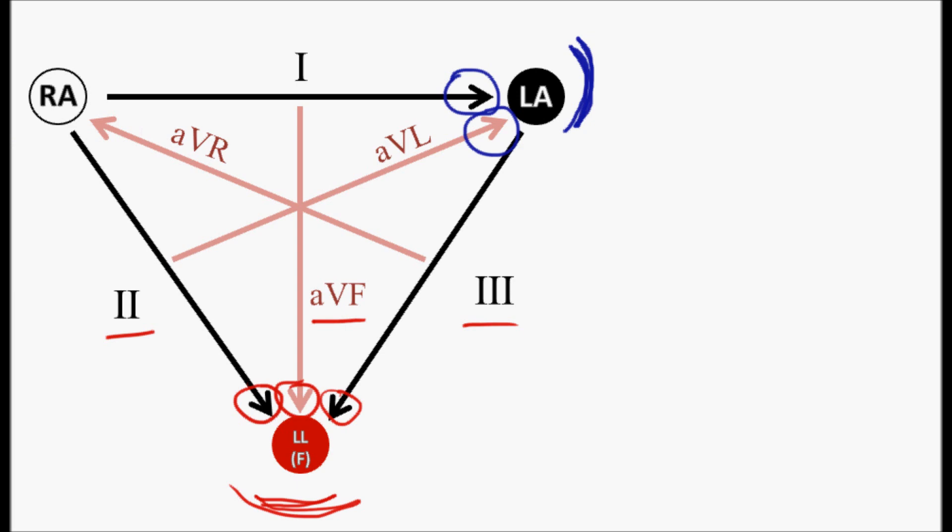Something else to take a look at also is notice that AVR is almost, not quite, but almost a direct opposite of lead two, and this will help with lead placement. When you first put on your 12 leads and you run your strip, take a look at AVR, and that should be an upside-down lead in reference to lead two. If it's not, check your lead placement.